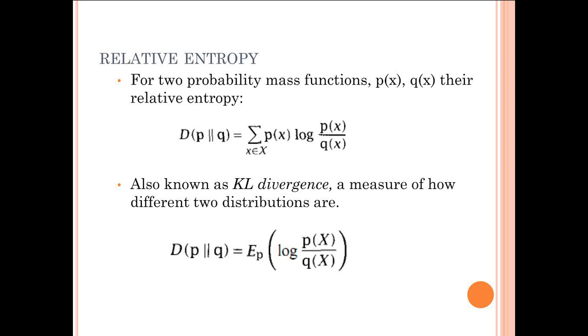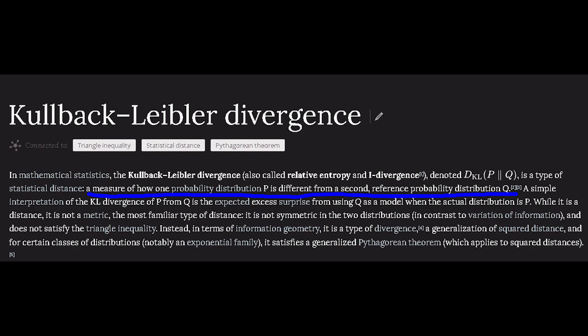The relative entropy, or Kullback-Leibler divergence of a to b, is simply shorthand for a times log a over b, a function used to, as Wikipedia puts it, measure how one probability distribution p is different from a second reference probability distribution q.